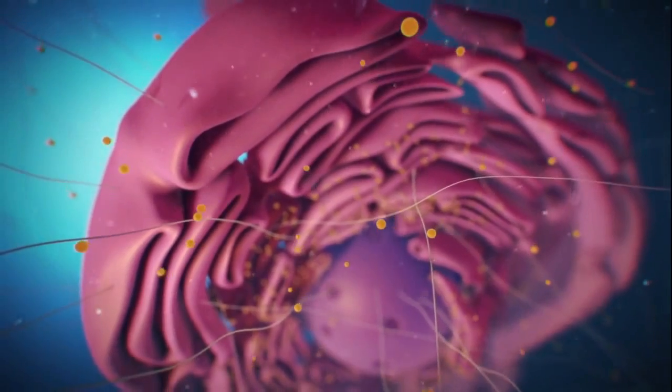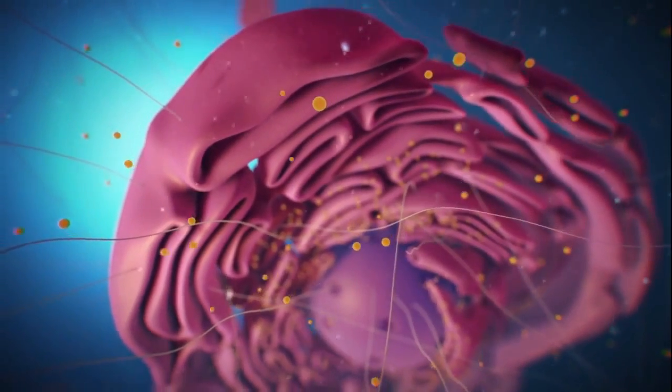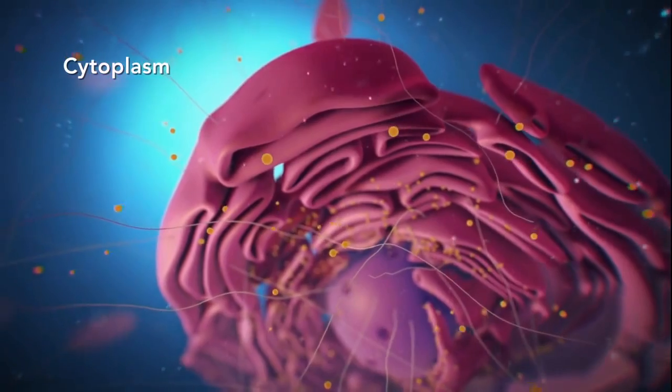Outside the nucleus, the ribosomes and the rest of the organelles float around in cytoplasm, which is the jelly-like substance.